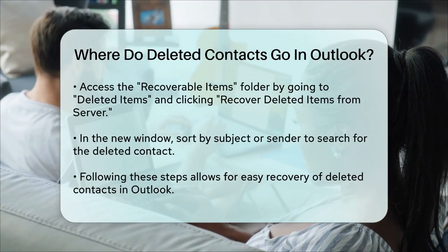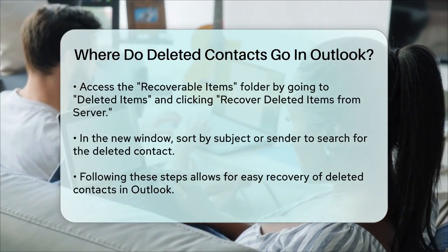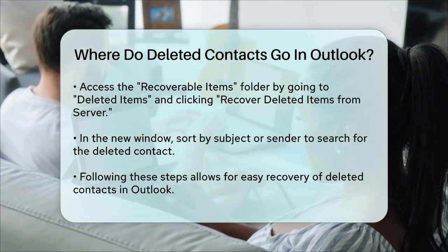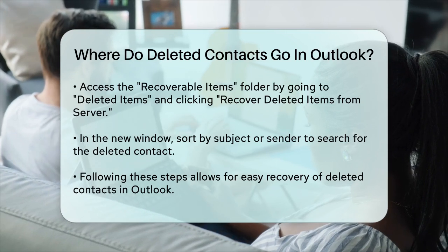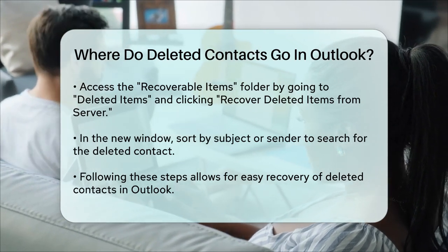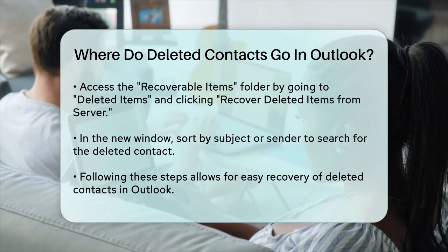So to sum it up, deleted contacts in Outlook go to the Deleted Items folder first, and if they're not there, you can find them in the Recoverable Items folder. By following these steps, you can easily recover your deleted contacts and get back to managing your contacts efficiently.